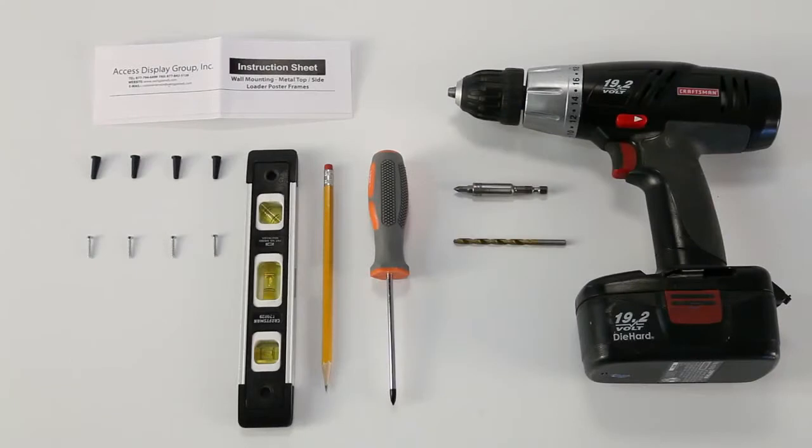The wall mounting hardware consists of four wall anchors and four screws. You'll also need a pencil, a level, and a hand drill. If you're wall mounting the sliding frame to a concrete or brick surface, you'll need to purchase different hardware from your local hardware store.